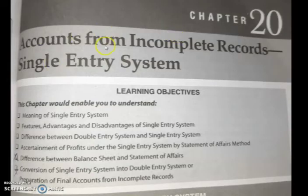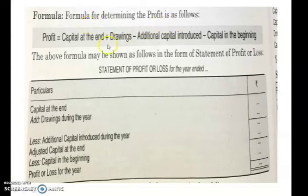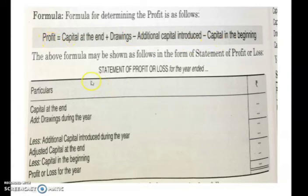The next chapter is accounts from incomplete records. As you know, it was a recently discussed chapter. In the single-entry or incomplete records system, it is not scientific or systematic — recording is done based on limited information received. The formula to determine profit is: profit equals capital at the end plus drawings minus additional capital introduced minus capital in the beginning.